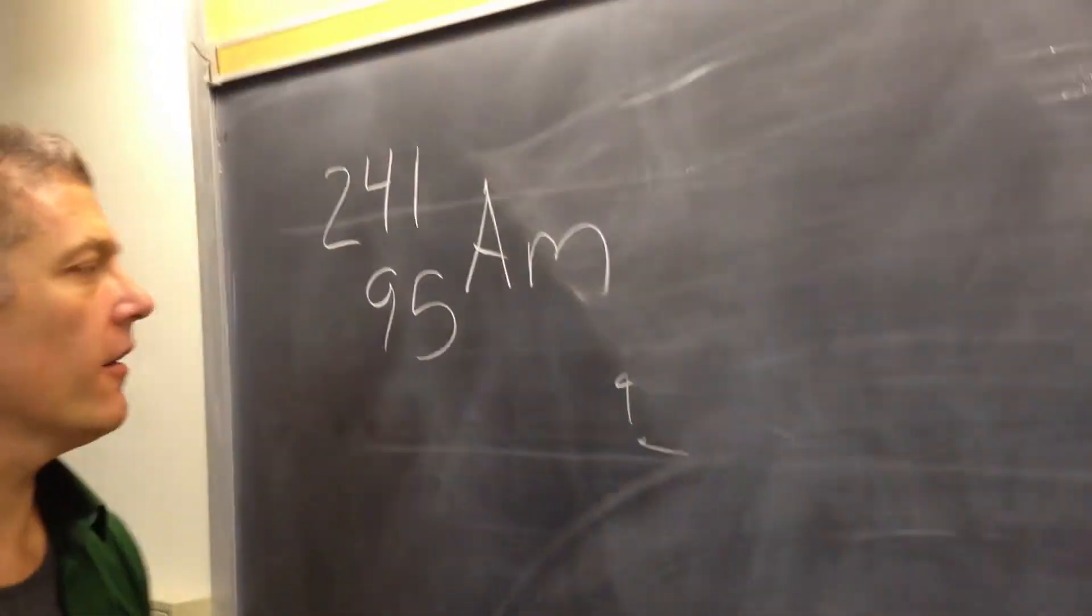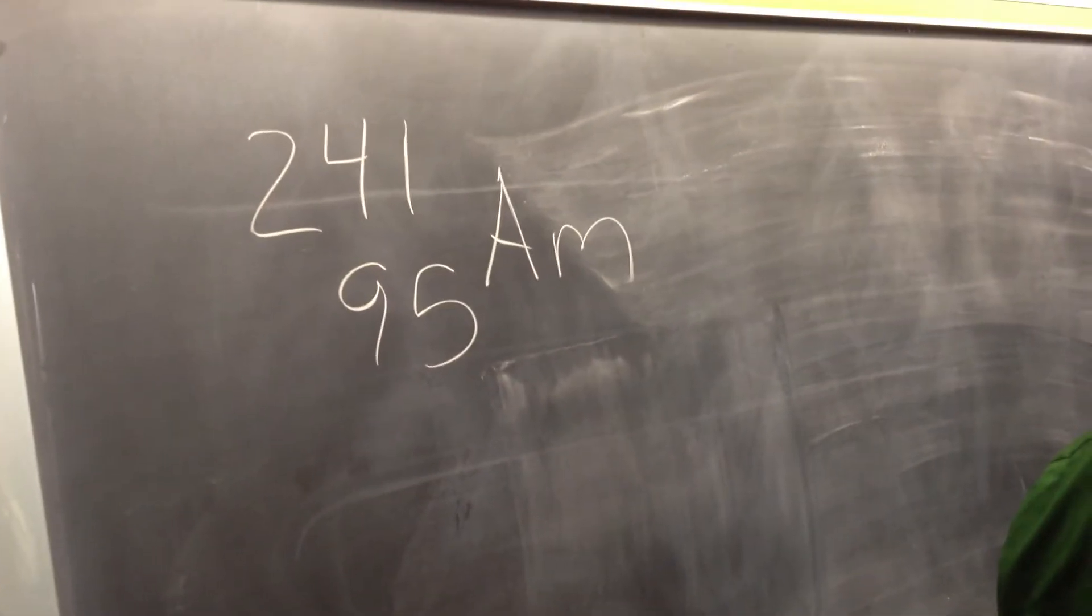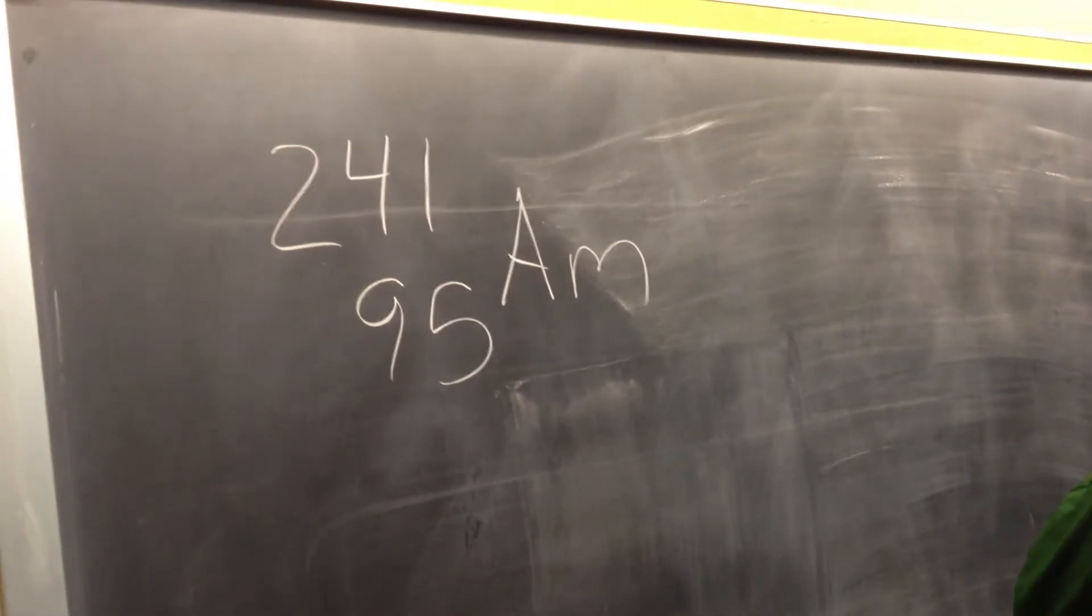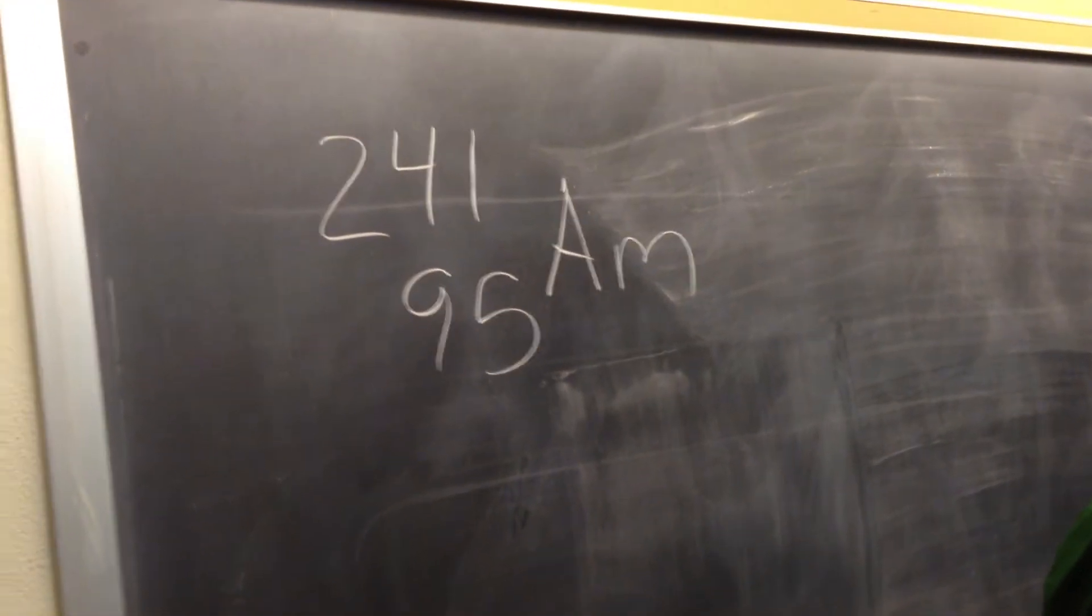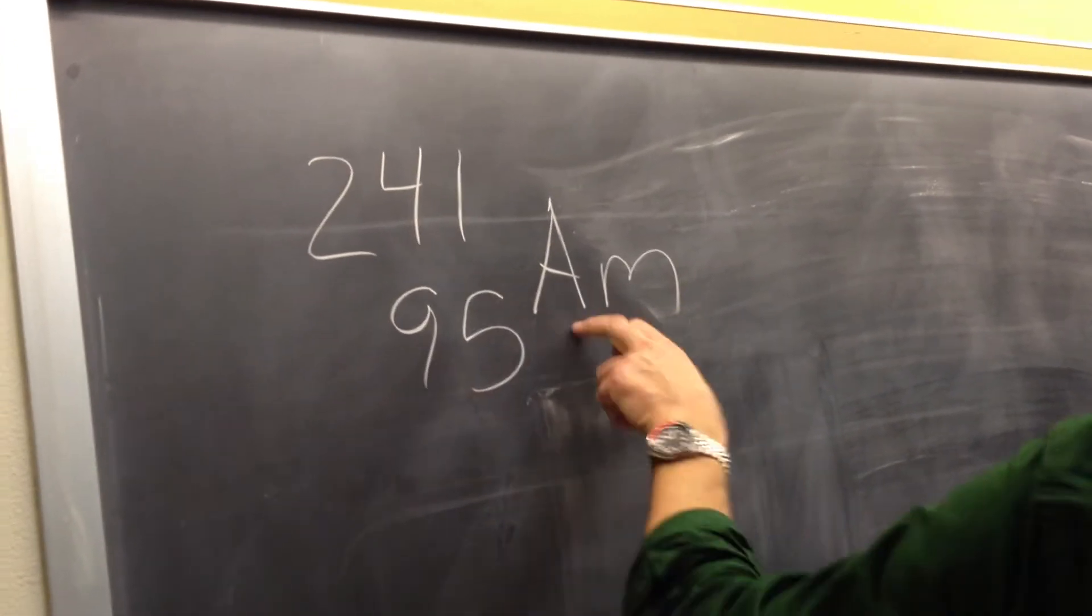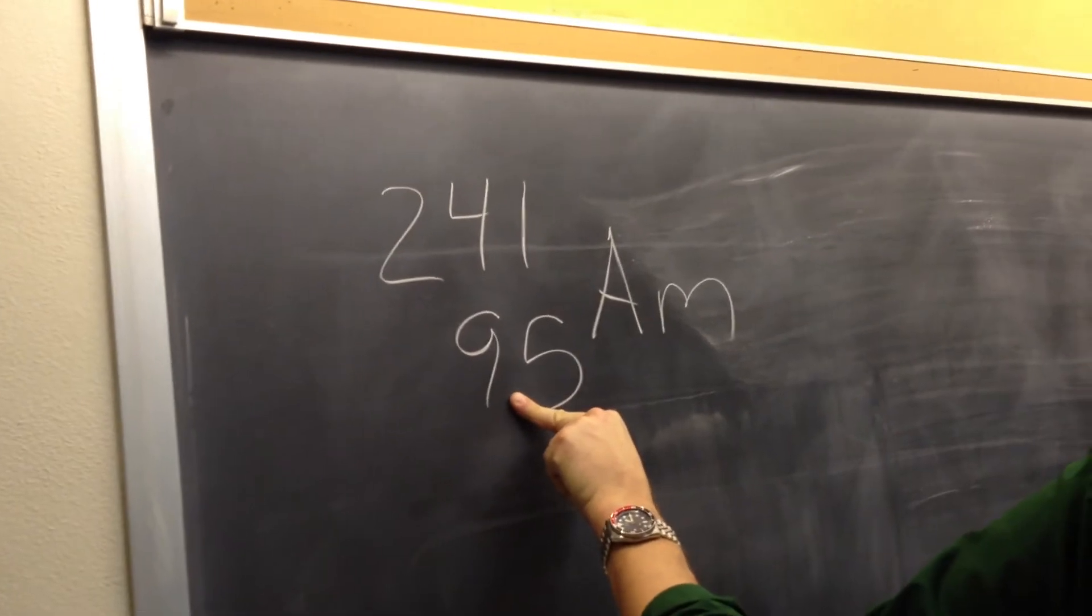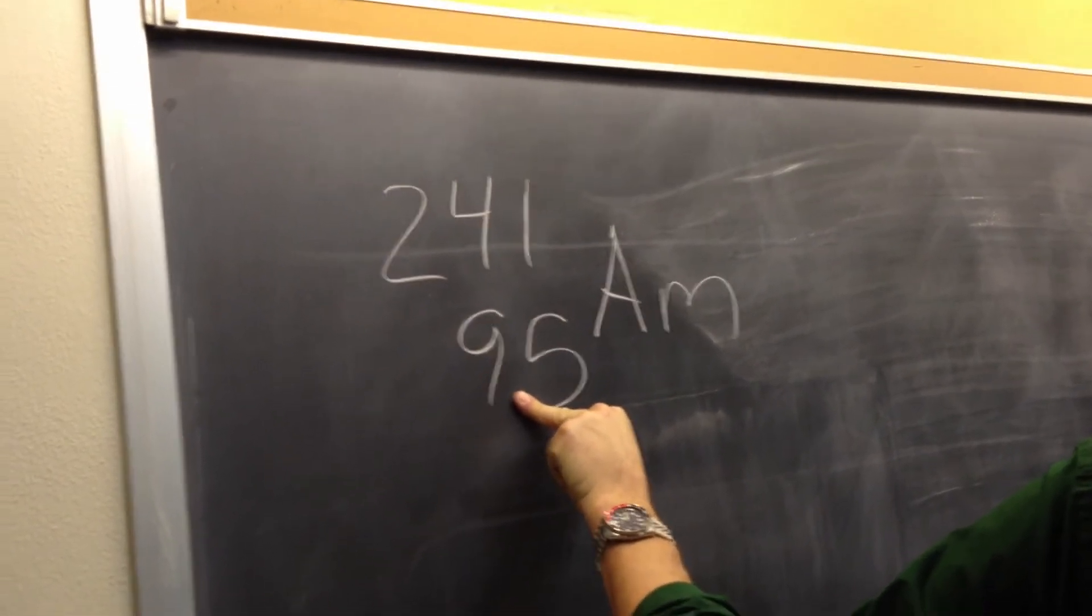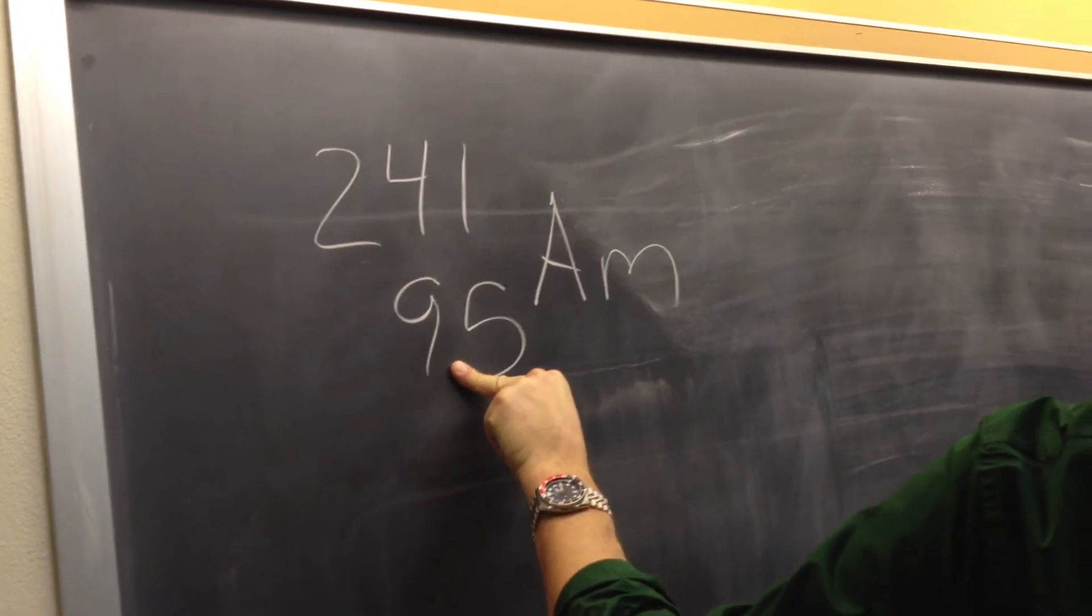Now, based on what you've already learned today, what should that be emitting? What kind? Look at this number. It's 95. What's the last stable isotope on the periodic table? 83. What are all the other ones unstable to?